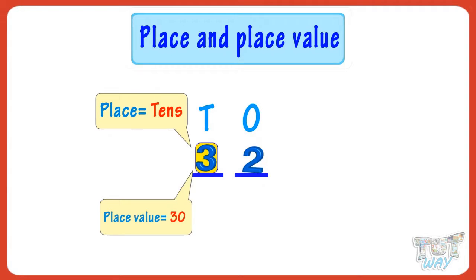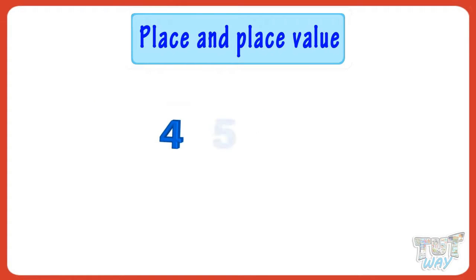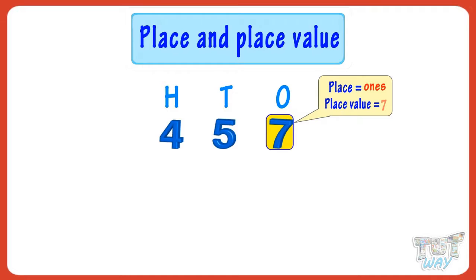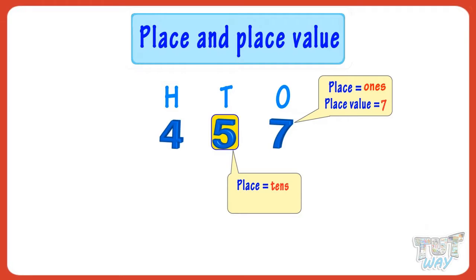Let's learn the concept with more examples. We have the number four hundred and fifty-seven. Let's start with seven — its place is the ones place, and its place value is seven ones, that is seven. The place of five is the tens place, and its place value is five tens.